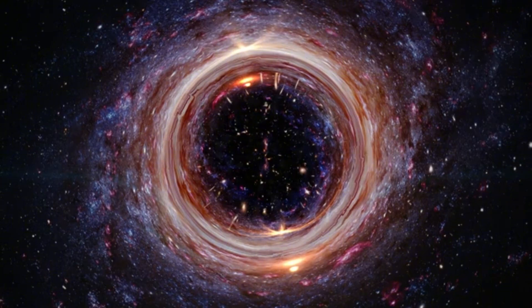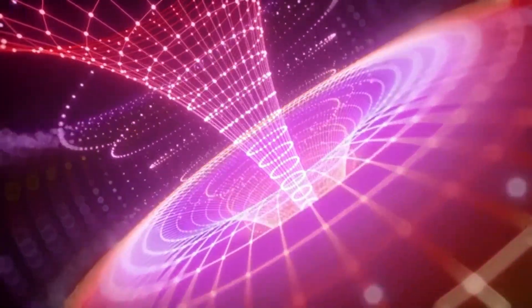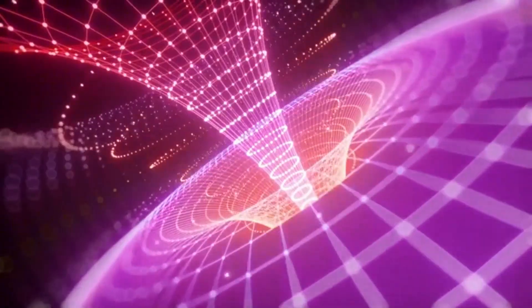Scientists have developed several theories to explain how they form, with one of the most prominent being the idea that black holes originate from collapsing stars. When a star runs out of fuel, it can no longer generate the energy needed to counteract the force of gravity, causing it to implode. If the star is massive enough, this collapse continues until the star becomes a singularity.